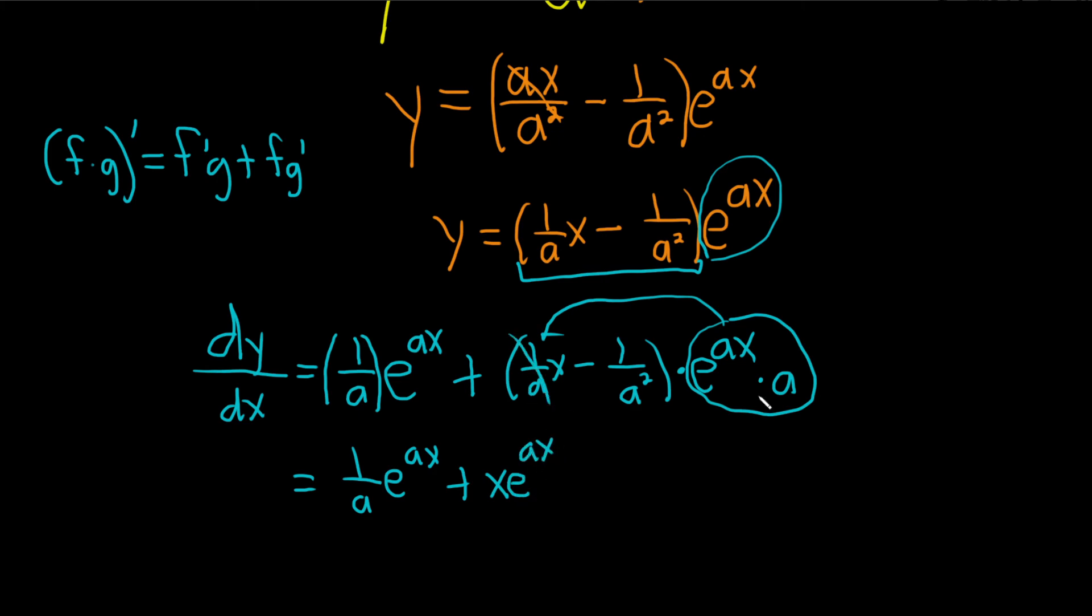Right, because this one and this one cancel. And same thing here, except here we're going to get minus 1 over a e to the a x when we do this, right? Because we'll lose an a. So this and this will cancel.